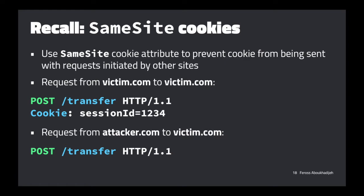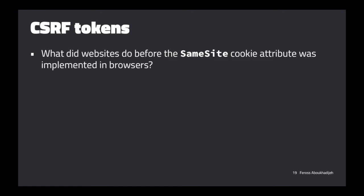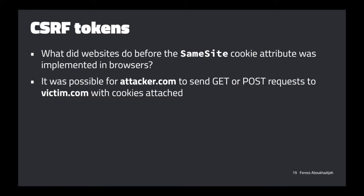Same-site comes up all the time — it's a really great cookie feature. Now let's talk about something new: CSRF tokens. I wasn't planning to discuss this in class, but I'm going to mention it because it's required to understand the GitHub attack. CSRF tokens are actually kind of unnecessary these days — they are a way to get the behavior of same-site cookies, but before same-site cookies existed. What did websites used to do before the same-site cookie attribute existed? For most of the web's existence there was no same-site attribute, so attacker.com could send a GET or POST to your site with your cookies attached.